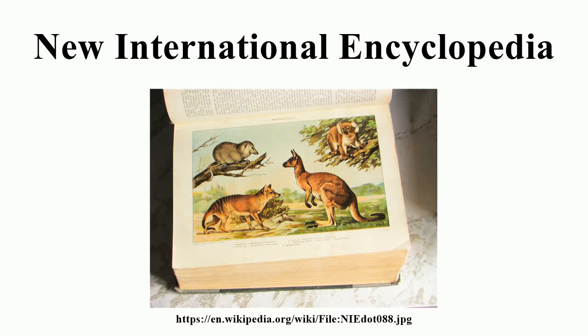The New International Encyclopedia was an American encyclopedia first published in 1902 by Dodd, Mead and Company. It descended from the International Cyclopedia and was updated in 1906, 1914, and 1926.